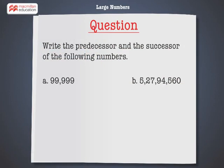Write the predecessor and the successor of the following numbers: a) 99,999, b) 5,27,94,560.